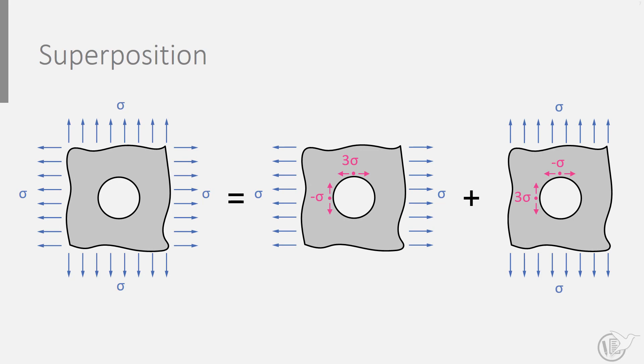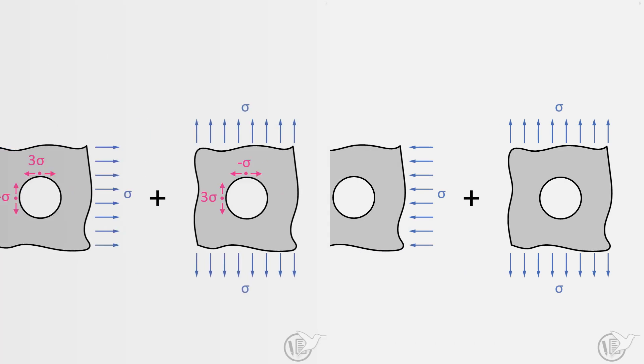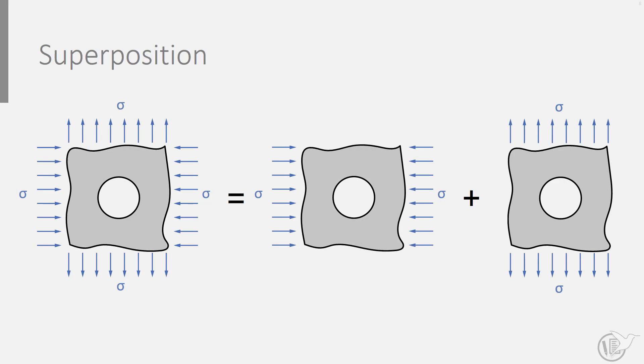For the case of biaxial tensile loading with both loads equal in magnitude, the effective peak stress imposed by loading in one direction is reduced by the load component in the other direction. Hence the stress concentration reduces to two. The opposite is also true. If the vertical load is tensile and the horizontal load is compressive but equal in magnitude, the peak stress goes up to four. This means that the stress concentration for biaxial loading may vary between two and four dependent on the combination of the load.